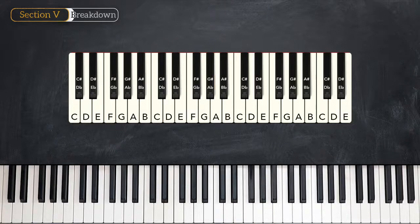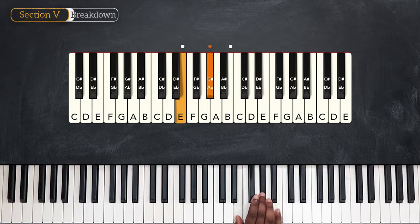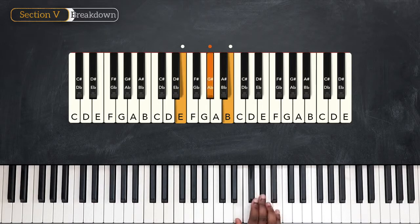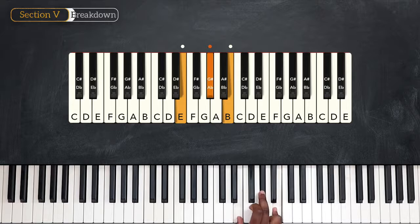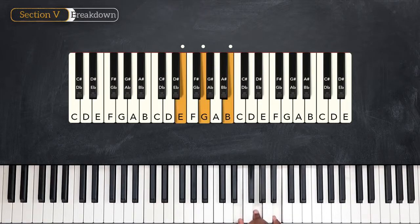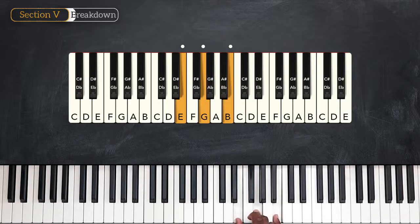Let's continue. We have E. Let's create E major. E is the root, G sharp is the major third, and B is the fifth. E and B are both in the C major scale, but G sharp isn't. So let's try the minor. The minor third — G is in the scale of C. So E in C major has to be minor.